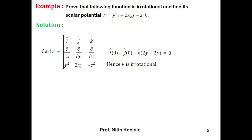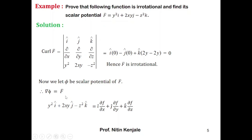Since f bar is irrotational, its scalar potential can be found. Let phi be the required scalar potential. Then gradient of phi equals f bar. Substituting the value of f bar, we get y²·i plus 2xy·j minus z²·k equals i·∂phi/∂x plus j·∂phi/∂y plus k·∂phi/∂z.